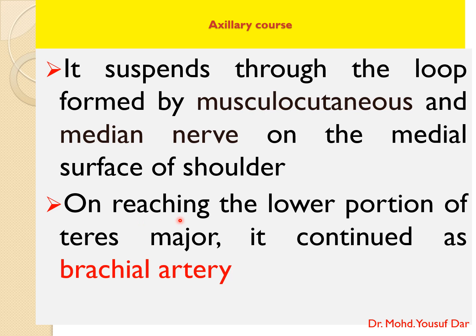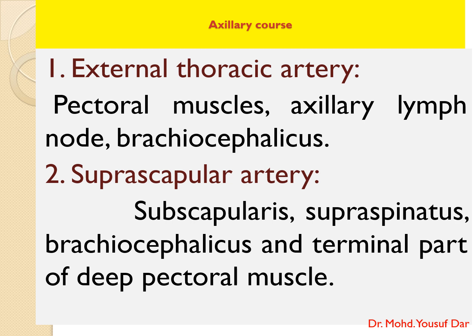On reaching the lower portion of the teres major, the axillary artery continues as the brachial artery. The brachial artery, after crossing the medial condyle of the humerus, runs as the median artery. The median artery finally terminates into the radial artery and ulnar artery. The branches given after leaving the thoracic cavity are known as extrathoracic branches, and this course is known as the extrathoracic course or axillary course.